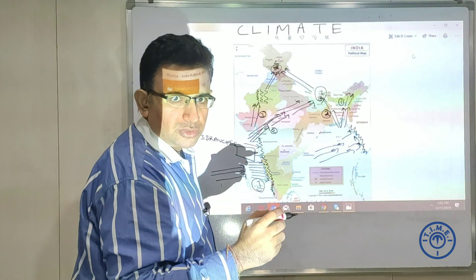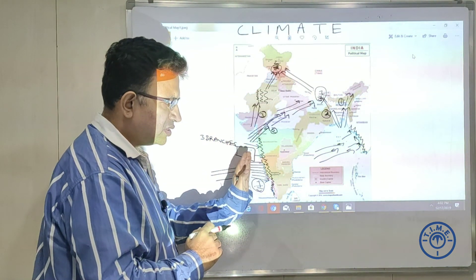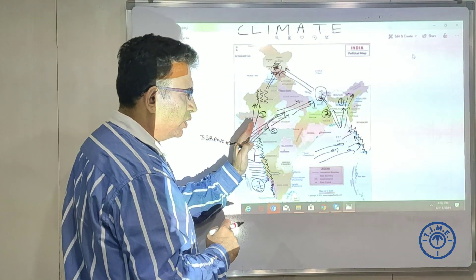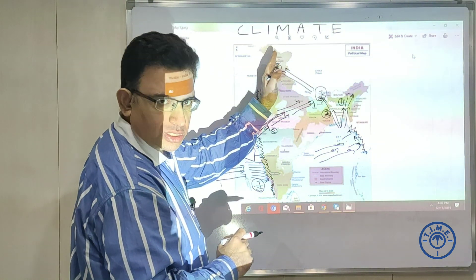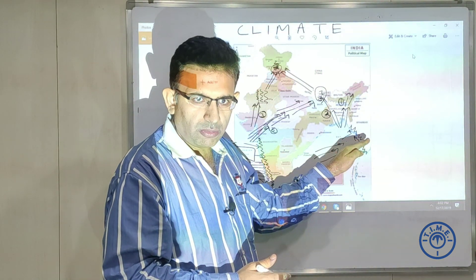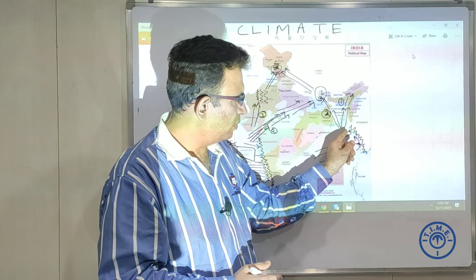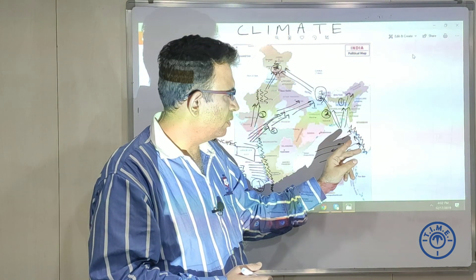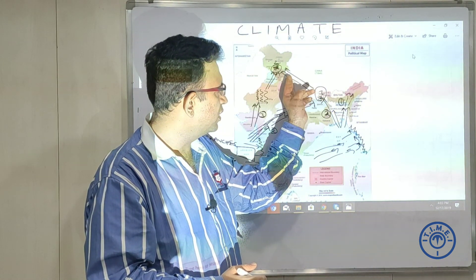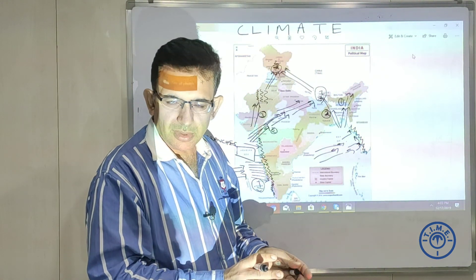In summary: Arabian Sea Branch 1 hits the Western Ghats; Branch 2 goes across central India meeting the first star point; Branch 3 goes from Gujarat past the Aravallis with scanty rainfall all the way to Jammu and Kashmir. For the Bay of Bengal: the winds hit the Arakan mountains and split — Branch 1 goes to the Brahmaputra valley and northeast; Branch 2 goes from West Bengal, meets the Arabian Sea branch at the first star point, then both proceed to meet again at Kashmir. That's all about the Southeast Monsoon winds.